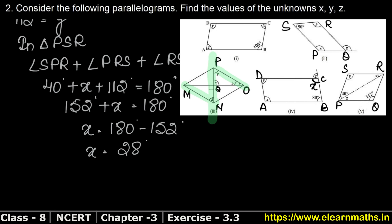Now we know x equals 28 degrees and y equals 112 degrees. Now for z: SR is parallel to PQ because PQRS is a parallelogram, and PR is a transversal.